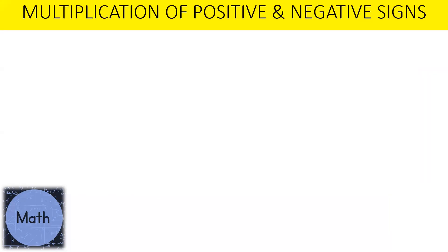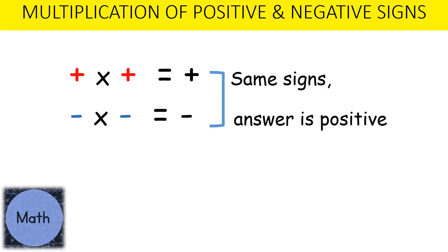For the multiplication of positive and negative signs: a positive multiplied by a positive gives a positive answer. A negative multiplied by a negative also equals a positive, because when we have the same signs the answer is positive.